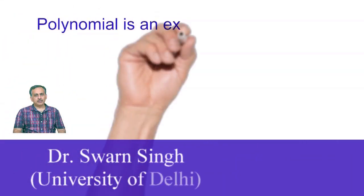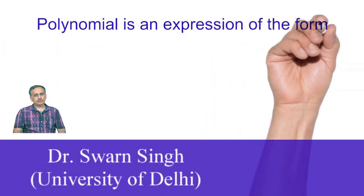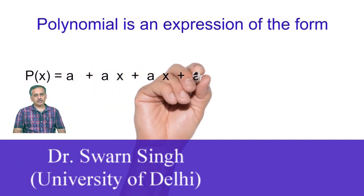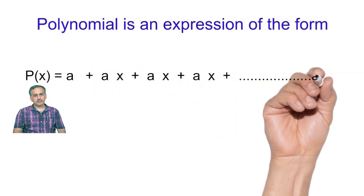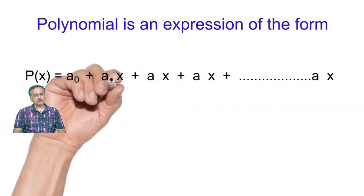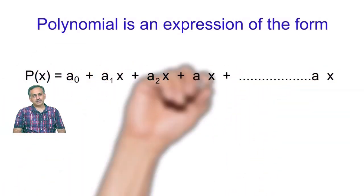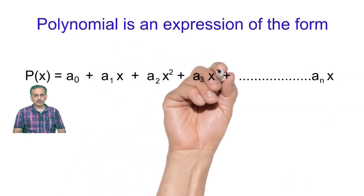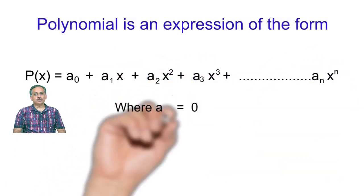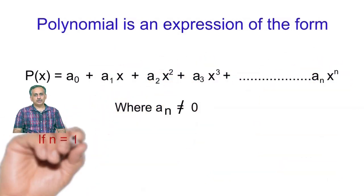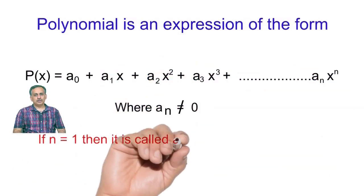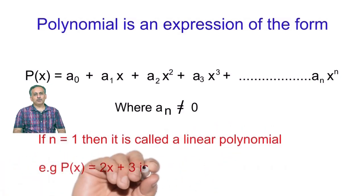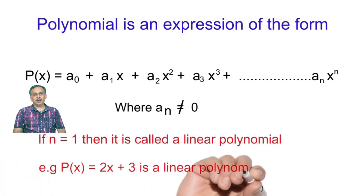What is a polynomial? It is an expression of the form a0 plus a1x plus a2x square, and so on, plus an into x to the power n, where an is not equal to 0. Such an expression is called a polynomial of degree n.